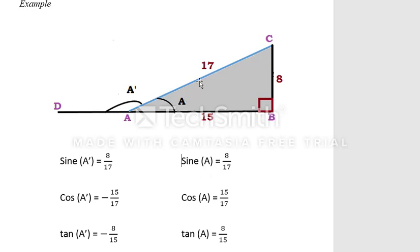Cosine of A, as part of the right-angle triangle, is the adjacent side over hypotenuse: 15/17. We already observed that cosine of the acute angle and cosine of the obtuse angle have the same numerical value but there is a negative sign with the obtuse angle. So cosine of A dash is −15/17. Tangent also has the same behavior as cosine. Tangent of A is 8/15 (perpendicular over base), and tangent of A dash is −8/15.